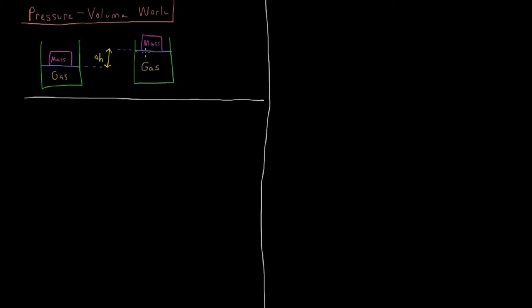Or you could think this gas was here and then we put the mass on top of it and then it pushed down to this height. Either way. And then the difference in the height between these two systems here is this delta H here. So this mass went from a height of either from here to here or from there to there. If it went from the top to the bottom that would be compression because we decreased the volume of the gas. If it went from the bottom to the top that would be expansion because we increased the volume of the gas.